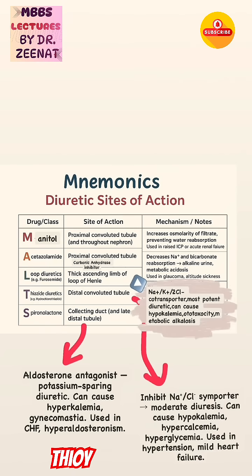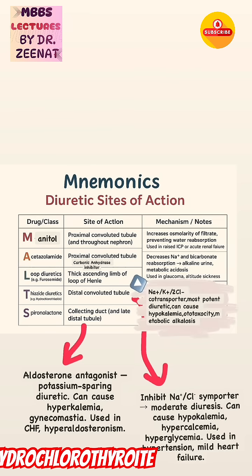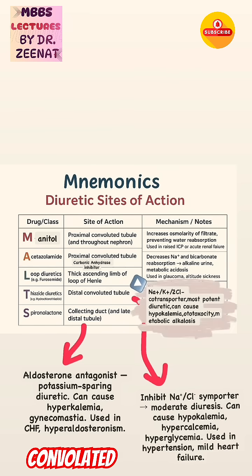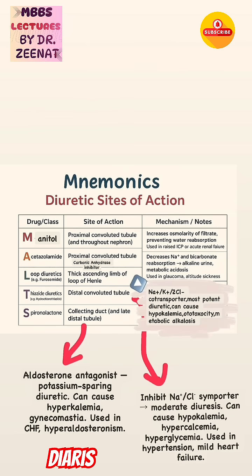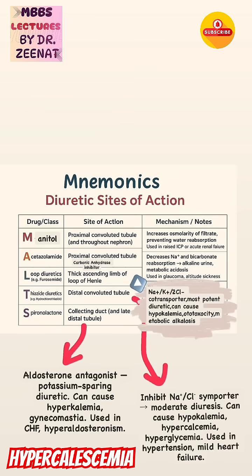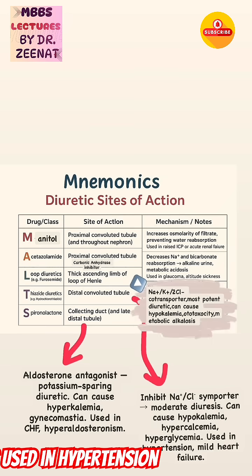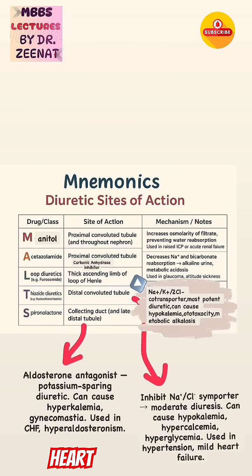Thiazide diuretics, for example hydrochlorothiazide, act on the distal convoluted tubule. They inhibit the sodium-chloride symporter and result in moderate diuresis, but can cause hypokalemia, hypercalcemia, and hyperglycemia. They are used in hypertension and mild heart failure.